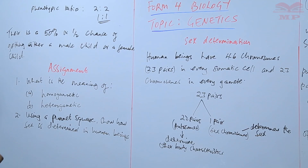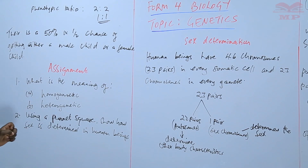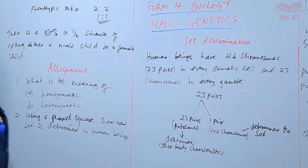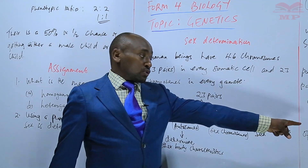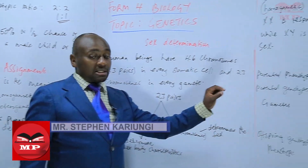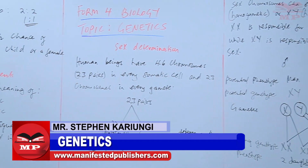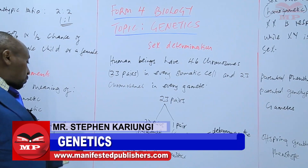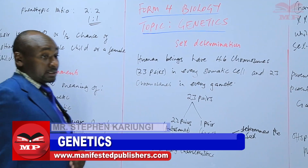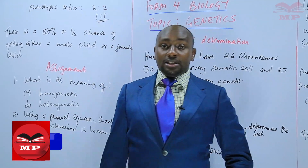For the assignment, the first question: what is the meaning of A, homogametic, and B, heterogametic? Using a Punnett square, show how sex is determined in human beings — using the checkerboard or Punnett square rather than the crossing method we used today. We'll stop there until next time. Goodbye.